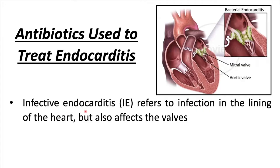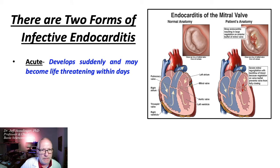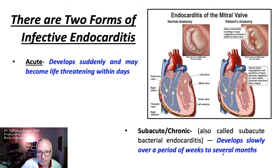Infective endocarditis refers to an infection in the lining of the heart, but it also affects the valves, most typically the mitral valve. Both native and prosthetic valves are involved. It can also affect the muscles of the heart. There are two forms of infective endocarditis. The acute form develops suddenly and may become life-threatening within days. The subacute or chronic form, also called subacute bacterial endocarditis, develops slowly over a period of weeks to several months.